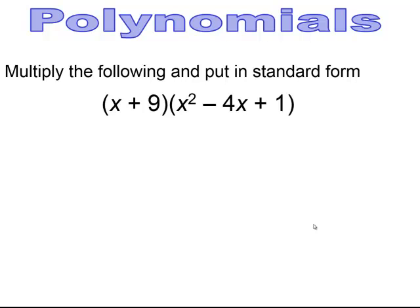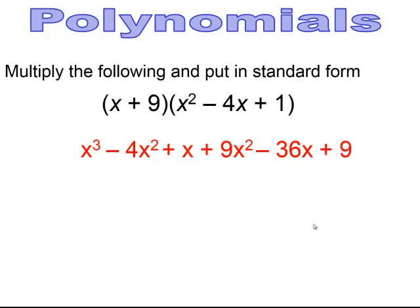Pause and try. Distributing gives x³ − 4x² + x + 9x² − 36x + 9. Combining like terms: −4x² + 9x² = 5x², and x − 36x = −35x. Final answer: x³ + 5x² − 35x + 9.